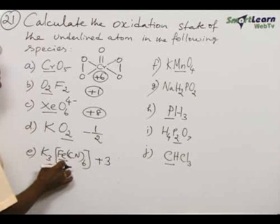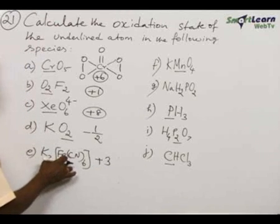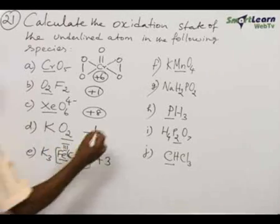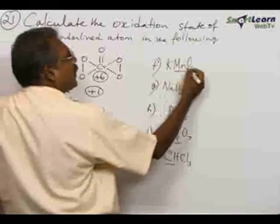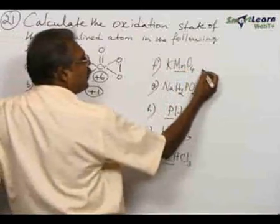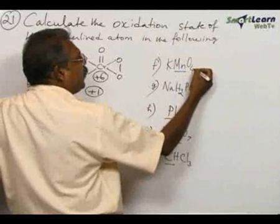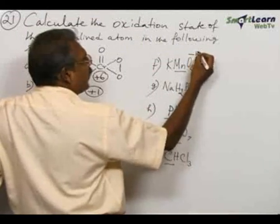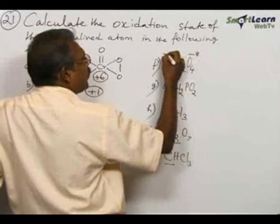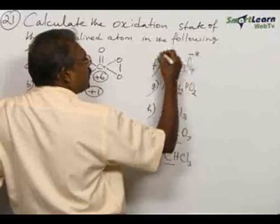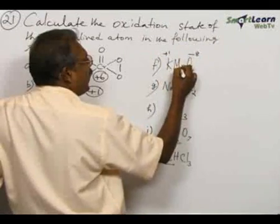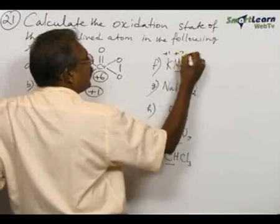The iron is in the ferric form, plus 3 oxidation state, which we can write in Roman numeral notation as Fe(III). Next compound: potassium permanganate, KMnO₄. Manganese with 4 oxygen atoms gives minus 8, and potassium gives plus 1. Therefore manganese must exhibit plus 7.